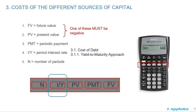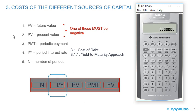Here's a quick calculator review. We're going to use the time value of money functionality to calculate the yield or price of a bond. The keys are: future value and present value — one of these must be negative. Payment equals the periodic payment; for a bond, that's the coupon payment. I/Y is what we're calculating for the cost of debt using the yield to maturity approach, and N is the number of periods.